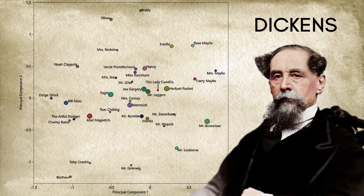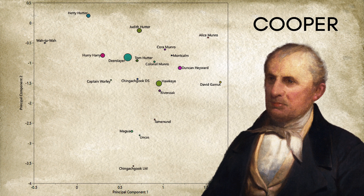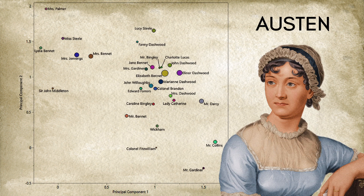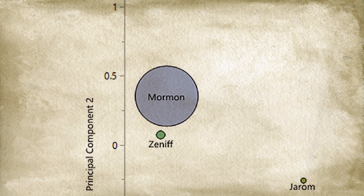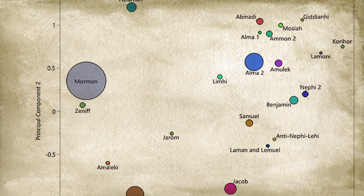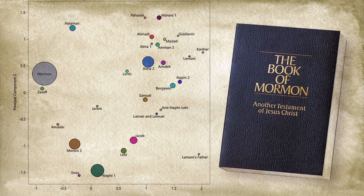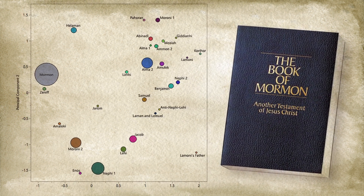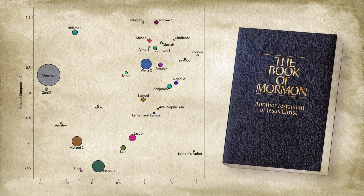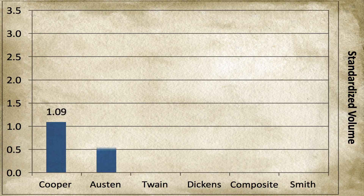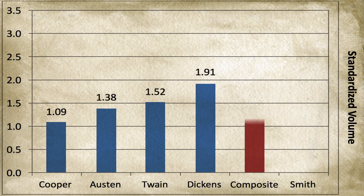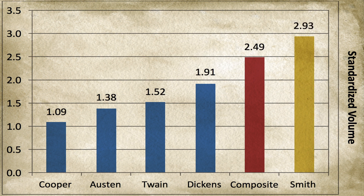Having successfully detected the distinct voices of these characters created by 19th-century novelists, the research team next applied the same stylometric method to the characters in the Book of Mormon. The results show that the diversity of voices in the Book of Mormon is remarkable, and that it contains 28 distinct voices that align with the words spoken by 28 different characters in the text. Strikingly, its voice diversity is even greater than the composite diversity achieved by Austen, Dickens, Cooper, and Twain in eight of their novels combined.